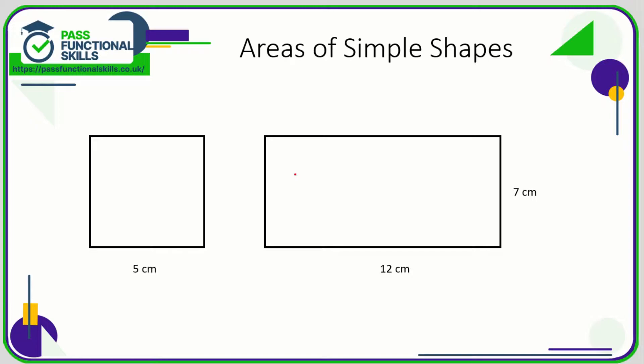Let's take a look at area. Now first of all, don't confuse area and perimeter. Perimeter is the distance around the outside, whereas area is the bits in the middle.